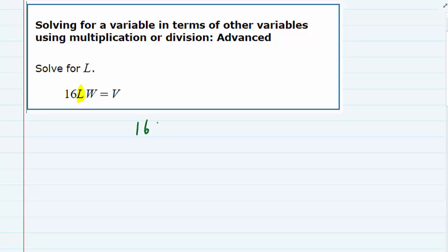So we've got a 16, an L, and a W on the left-hand side, and a V on the right-hand side. Now to get the L by itself I need to get rid of both the 16 and the W. But since the 16 and the W are both being multiplied by the L, what I can do is undo multiplication with division.